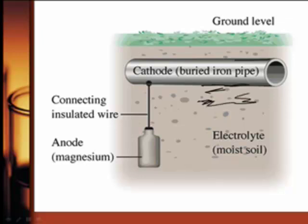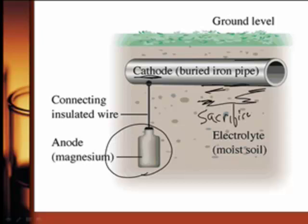So how do you make sure a pipe doesn't corrode? Well, you turn it into a cathode. If you can make it the cathode, what they do is add a piece of a more active metal — magnesium is the classic one they use. It's called a sacrificial anode because you're sacrificing it. You just have to make sure you replace them often enough.